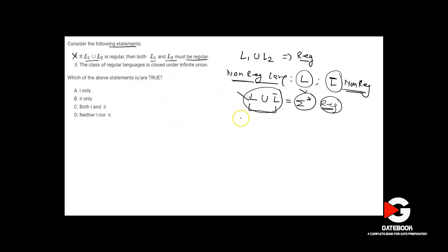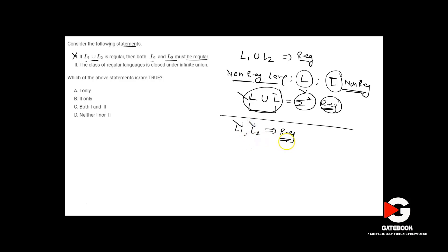Note that the converse is true: if L1 and L2 are both given as regular languages, then L1 union L2 will be regular, because regular languages are closed under union. If you have two regular languages, their union is also a regular language. But Statement 1 itself is false.